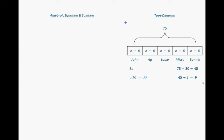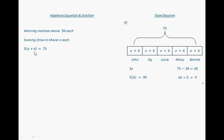Let's take a look at an algebraic equation and solution. We know the morning matinee movie was $6 each, and we designate E for the evening drive-in movie whose price we don't know. We have five times the quantity of E plus six, representing the evening ticket plus the morning ticket per person. Somehow that all adds up to $75. Using the distributive property, five times E gives us 5E, and five times six gives us 30 — similar to what we have in the tape diagram.